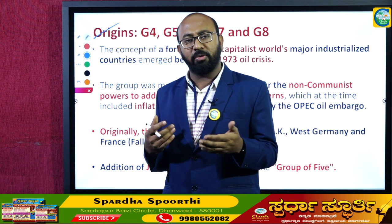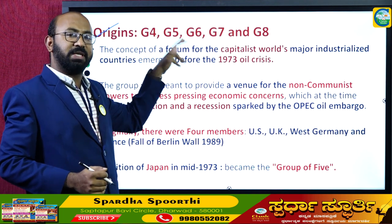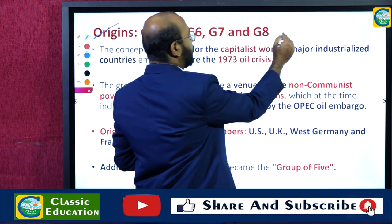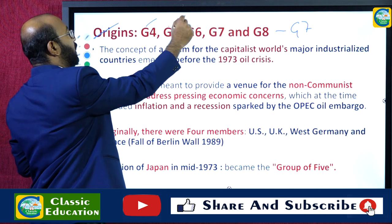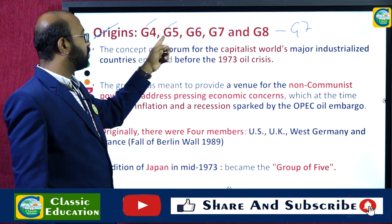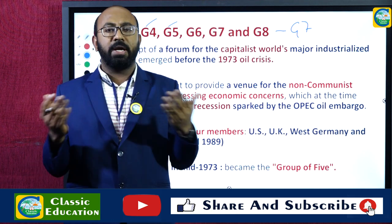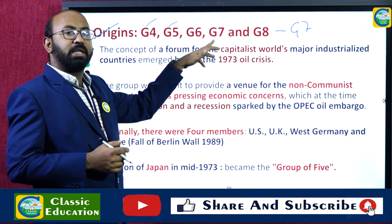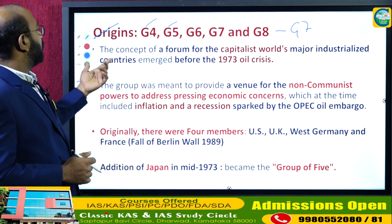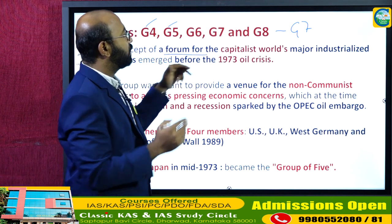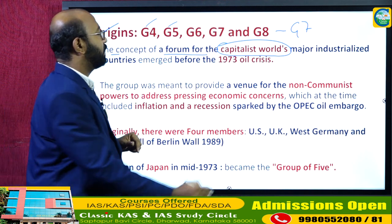Now let's understand how this grouping came into existence. The grouping evolved through stages: G4, G5, G6, G7, G8, and back to G7. Year after year, with the development of particular countries and widening areas of concern, the membership grew. The concept of a forum for the capitalist world's major industrialized countries emerged before the 1973 oil crisis.